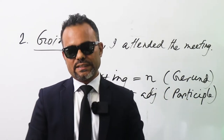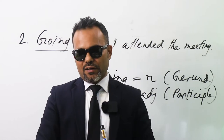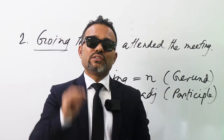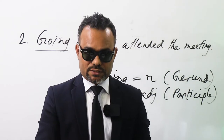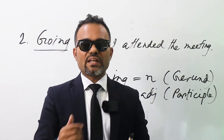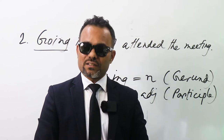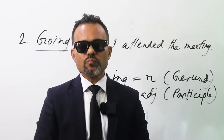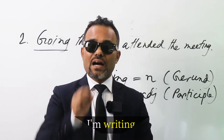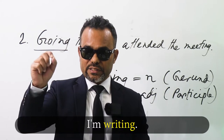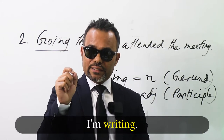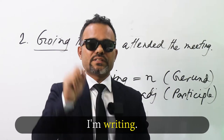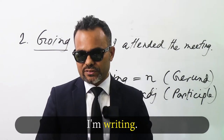We know rule one. Number two, the second rule: gerund can take an object. And participle can be used directly as a verb. For example, if I say 'I'm writing' — here 'writing' is directly a verb. So this is present participle.